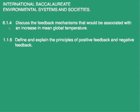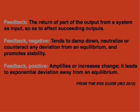Welcome. Today we discuss the feedback mechanisms associated with an increase in mean global temperature, reviewing topic 1.1.6 with a definition and explanation of the principles of positive and negative feedback. Feedback is the return of the output from a system as input so as to affect succeeding outputs. Negative feedback tends to dampen, neutralize, or counteract any deviation from an equilibrium, promoting stability. Positive feedback amplifies or increases change, leading to an exponential deviation away from equilibrium.